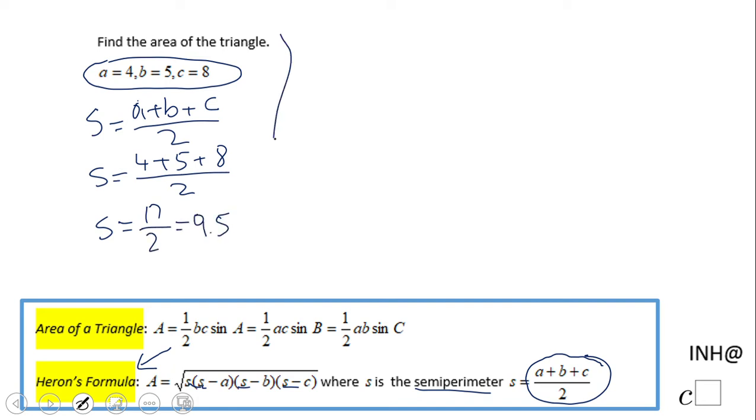So now we can go to the second part where we're going to use this formula, which says A equals square root of S times S minus A, S minus B, and S minus C.